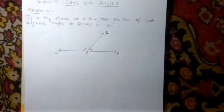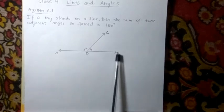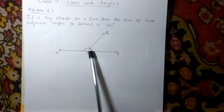This axiom is also called the linear pair axiom. Here is a line AB. Ray OC is standing on this line.